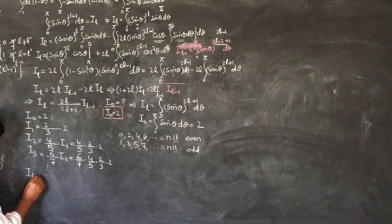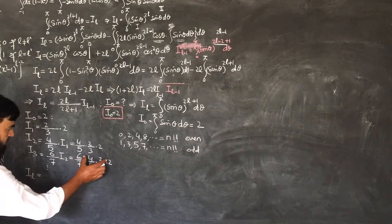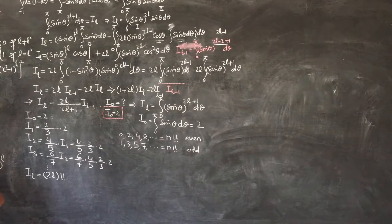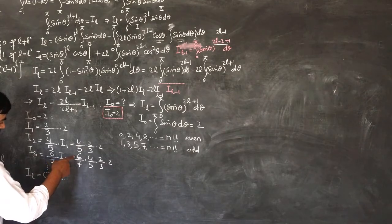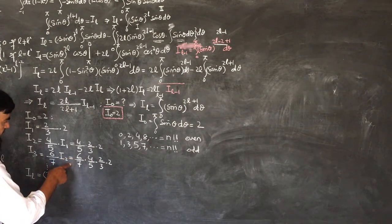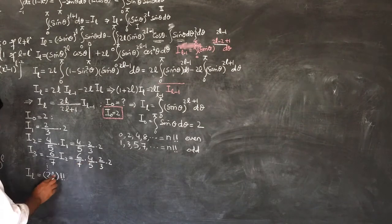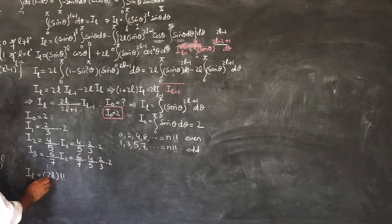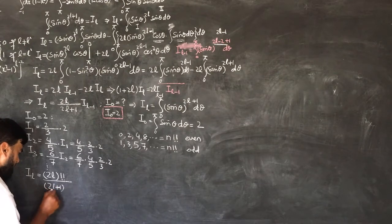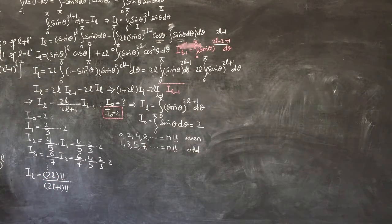The I_L terms will become equal. I_L will be — these terms are even, so I will write 2L double factorial for this one, because the terms here become 6, 4, 2. The fourth term will be 8 by 9, so I can write 2L — because L will be 1, so I will have 2 double factorial, then L equal to 2, L equal to 3, and so on — divided by 2L+1. So we get 2L double factorial by 2L+1 double factorial.